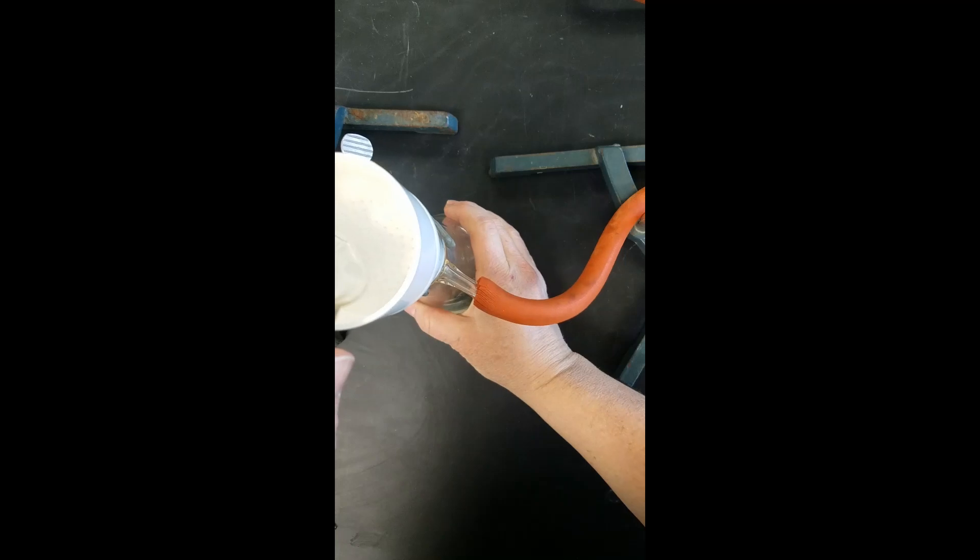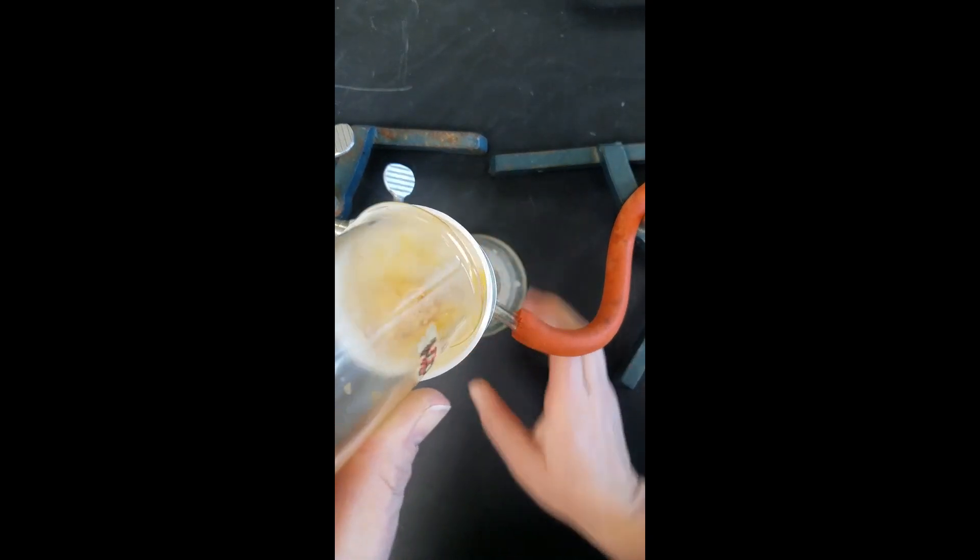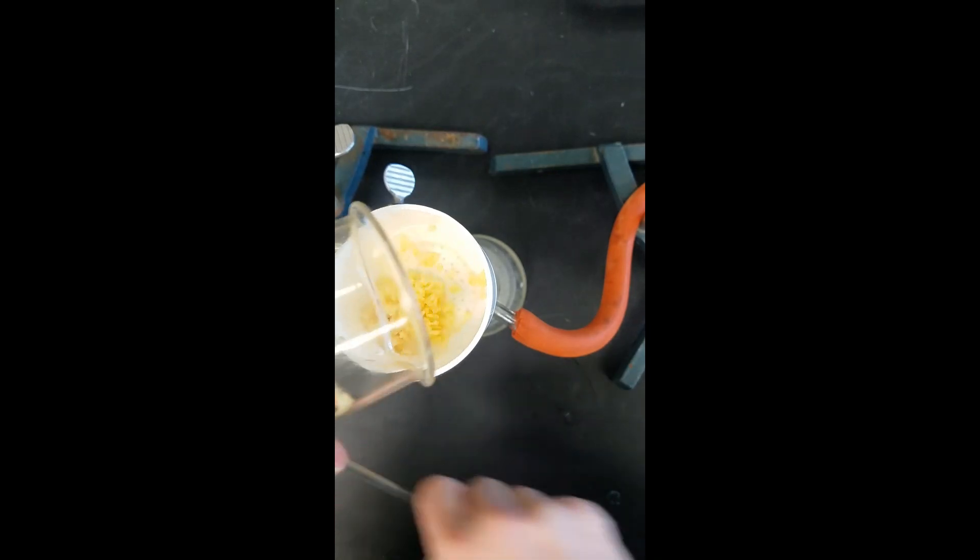After this has been stirred for one minute we're going to turn the vacuum on. We're going to pour our chips into our funnel here. I'm trying to get all of the chips in there. We're going to let that run for about one minute to pull as much of the petroleum ether out of the chips as possible.